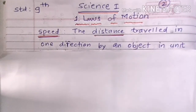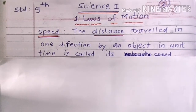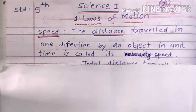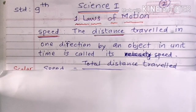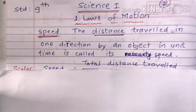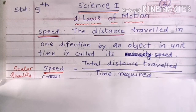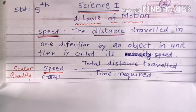What is meant by speed? Speed is the distance travelled in one direction by an object in unit time. The formula for speed is total distance travelled upon time required. Speed is a scalar quantity.